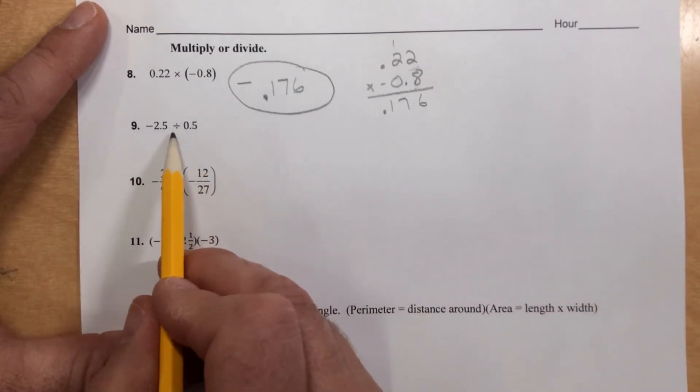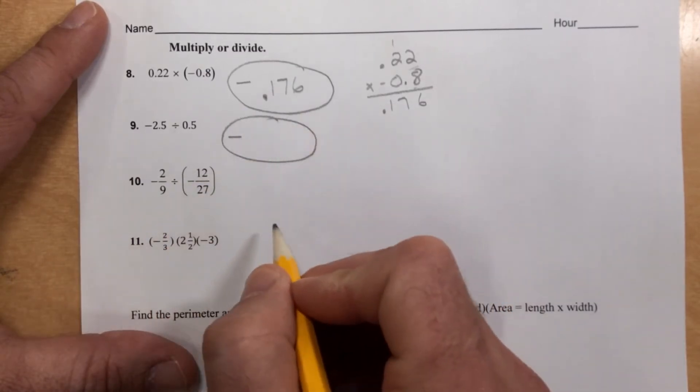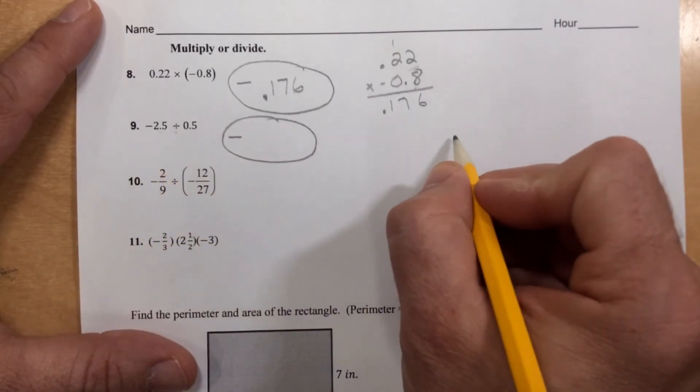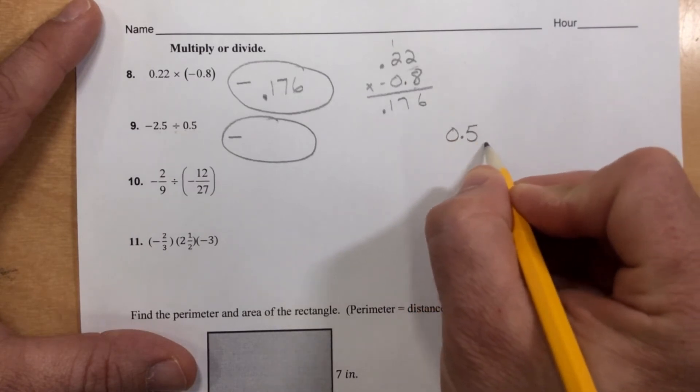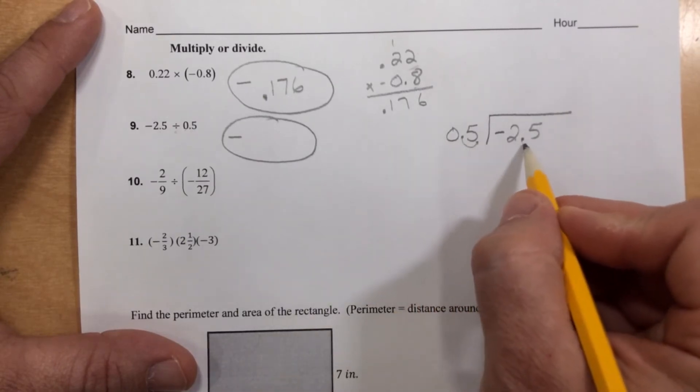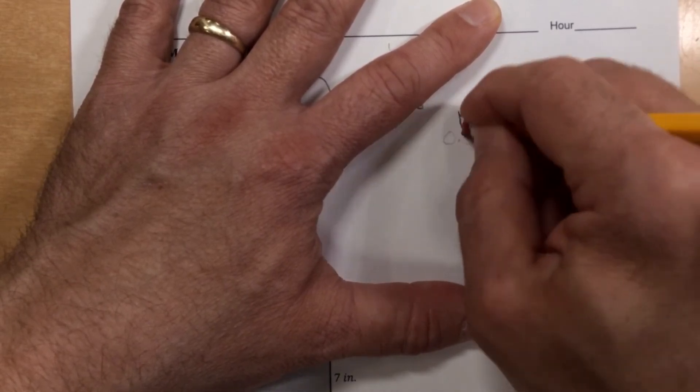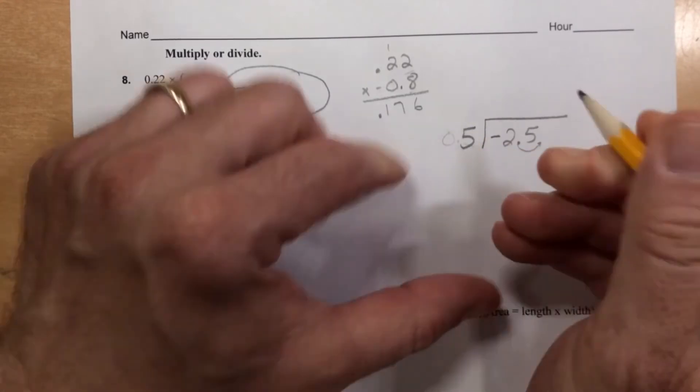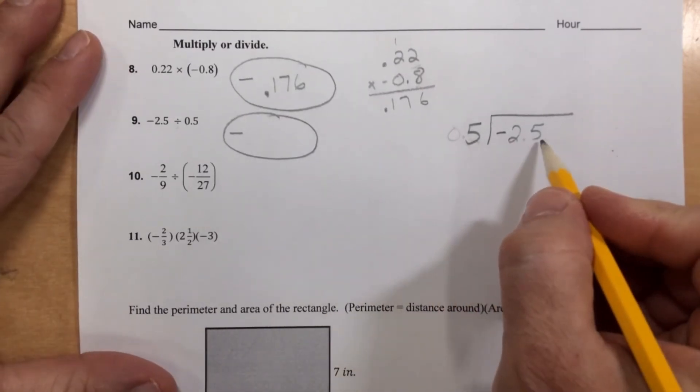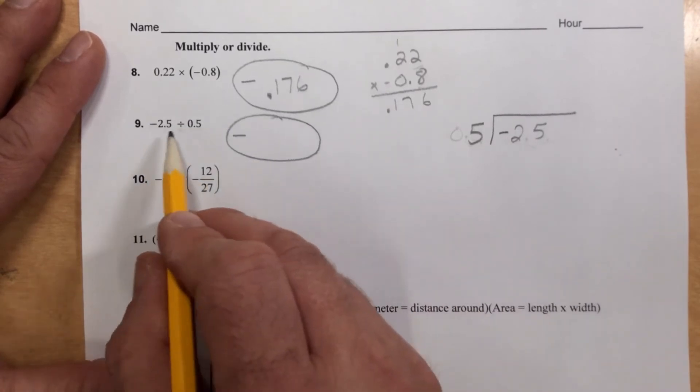Number 9. Different signs again. Here I'm dividing. Different signs again, though, so it's going to be negative again. So I'm going to put that negative up there so I don't forget. Remember, this is negative 2.5 divided by 0.5. That means the 0.5 goes on the outside and the negative 2.5 on the inside. We move the decimal one spot out here and one spot in here, which makes this problem now 5 on the outside and negative 25 on the inside. So 5 goes into 25. How many times? I'll let you wrap that up. Don't forget. It goes over here. Our answer is negative because there was one of each.